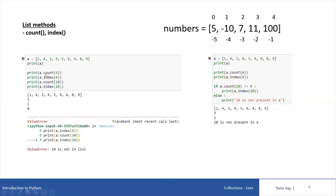If I want to count how many times a specific value is present in my list, the count function will return how many times four is present. Four appears one, two, three times. Because count is a method of list, I invoke it with the list variable: a.count(4), which counts the occurrences of four in list a.